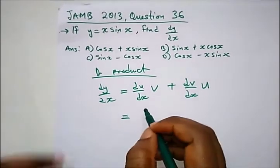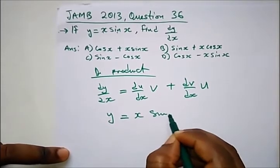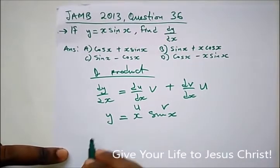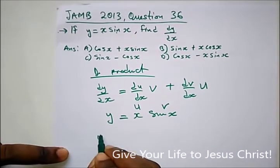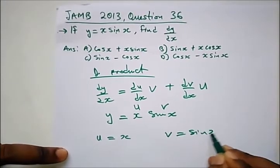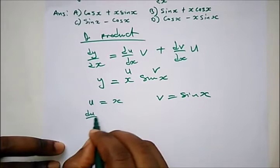Here we have x·sin(x). This will be u and this will be v. So u = x and v = sin(x).